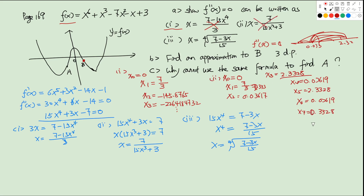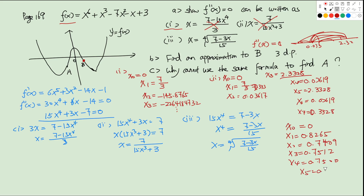Testing the third g(x) = ⁴√((7 - 3x)/15) from x0 = 0: x1 = 0.8265, x2 = 0.7409, x3 = 0.7512, x4 = 0.7500, x5 = 0.7501. For three decimal places, both x4 and x5 round to 0.750, so the answer is 0.750. The third g(x) is the best choice for part (b).